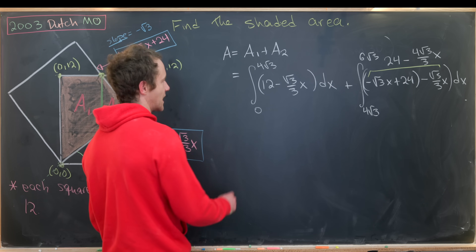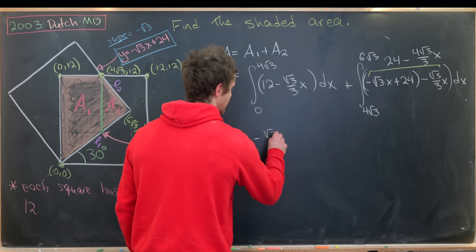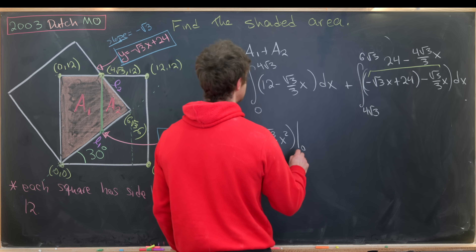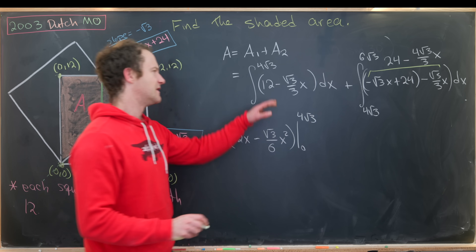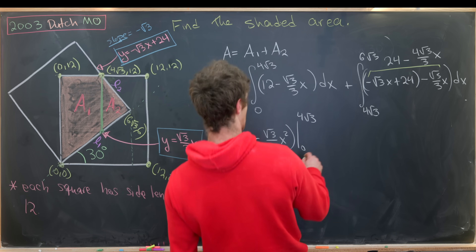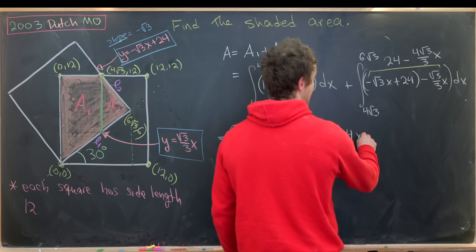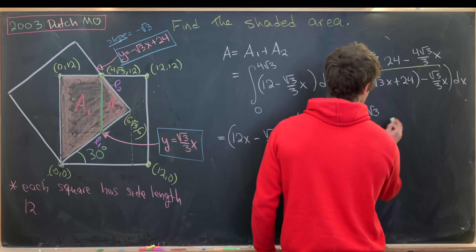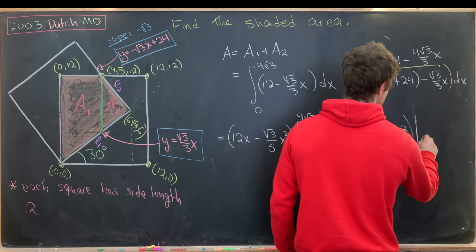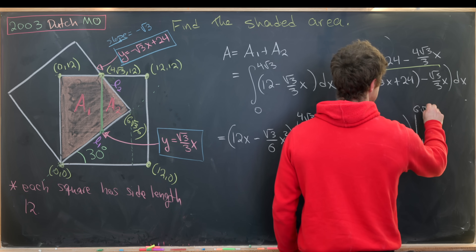Taking the antiderivatives: the first integral gives us 12x − (√3/6)x² evaluated from 0 to 4√3. The second gives us 24x − (2√3/3)x² evaluated from 4√3 to 6√3.